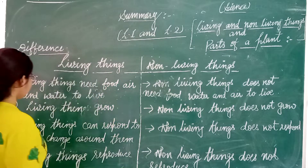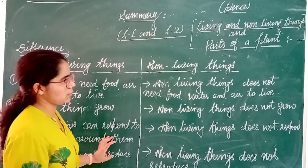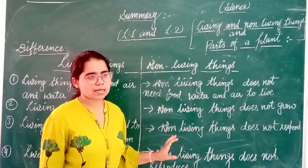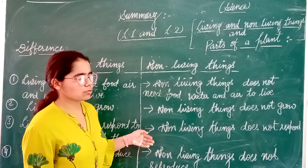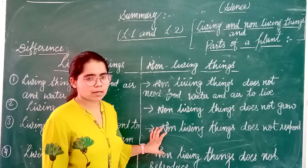Third difference: living things can respond to changes around them. It means living things can respond to the external stimuli of the environment.